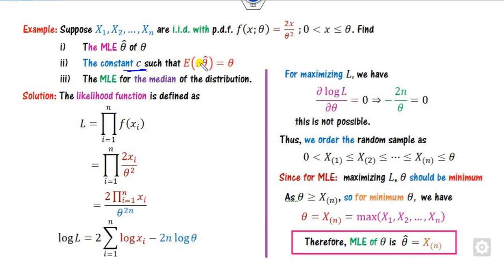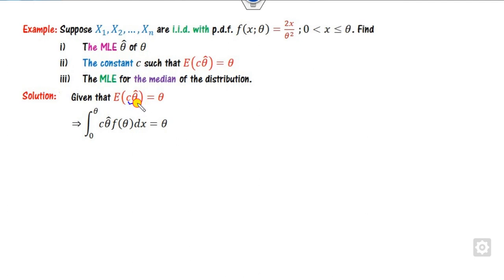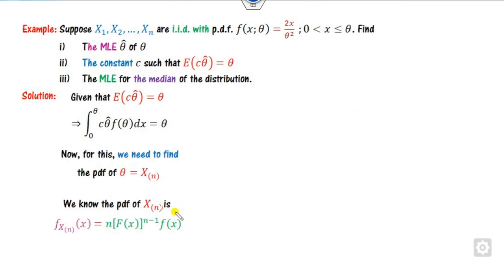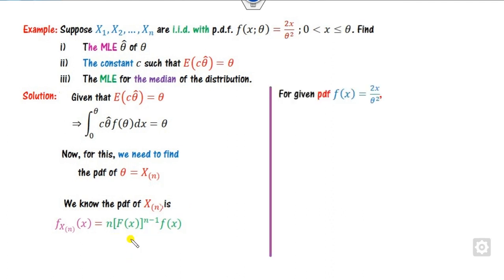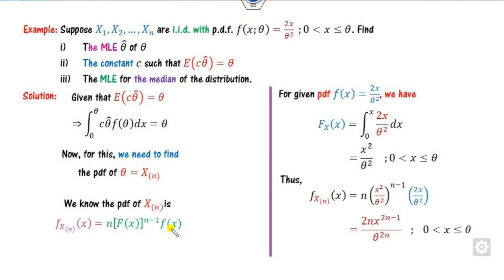Now how you can find the constant C such that the estimator is unbiased — that is the second part. We know that the expected value of X is the integral of x·f(x)dx. In this case, our target is to find the PDF of theta, which is the maximum order statistic X(N). The PDF of the maximum order statistic is n·[F(x)]^(n-1)·f(x), where f is the PDF and F is the CDF. The CDF F(x) is the integral from 0 to x, giving x²/theta². Substituting these expressions, you obtain the PDF of the maximum order statistic.